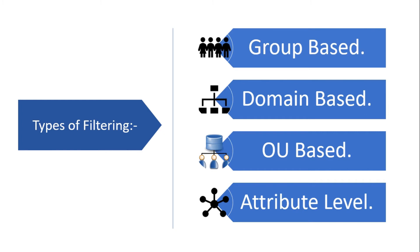The next one is domain-based filtering. Let's say you have a domain a.com and it has two child domains, a1.com and a2.com, and you don't want to sync any user objects from a2.com. What you can do is from the console itself, simply uncheck that domain and all the user objects from that particular domain will not be synced to the cloud.